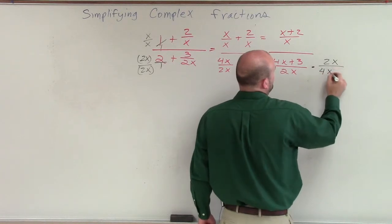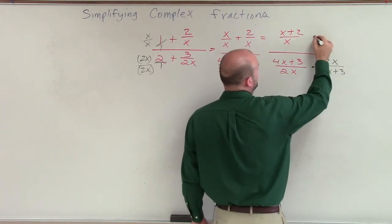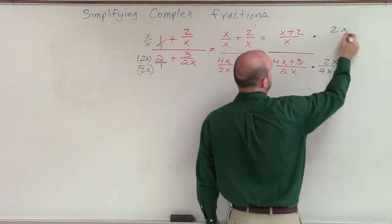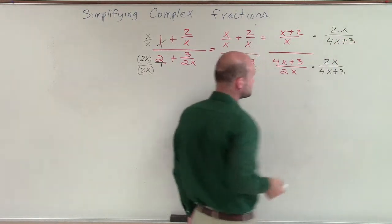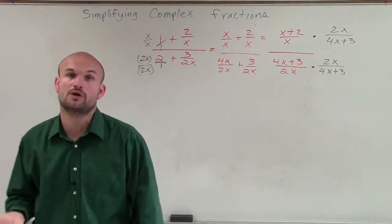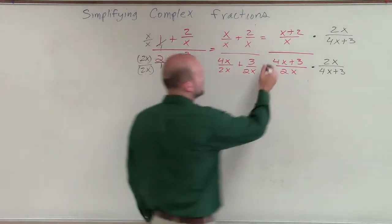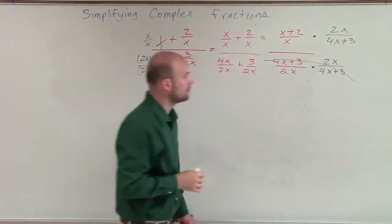So therefore, I'm left with 2x over 4x plus 3, and multiply by 2x over 4x plus 3. Because remember, whatever we do in our numerator, we have to do in our denominator. So we know that this is going to divide or multiply into 1.